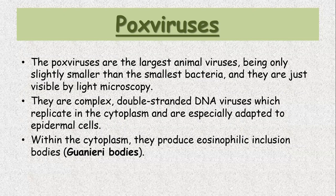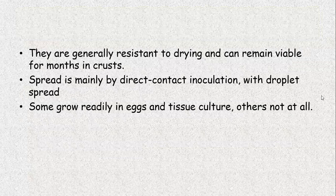Then comes the poxviruses — this is a big group of viruses we are going to discuss today. The poxviruses are the largest animal viruses, being only slightly smaller than the smallest bacteria, and they are just visible by light microscopy. They are complex, double-stranded DNA viruses which replicate in cytoplasm and are specially adapted for epidermal cells. Within the cytoplasm, they produce eosinophilic inclusions which are called as the Guarnieri bodies. They are generally resistant to drying and can remain viable for months in a crust. Spread is mainly by direct contact inoculation with droplet spread.